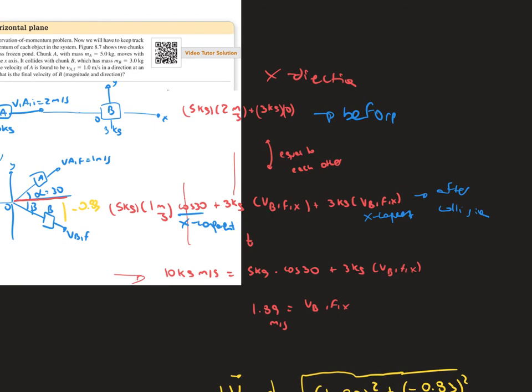So first, we get the x-components in the x-direction. We add them up and say that the mass of object A times the velocity plus the mass of object B times the velocity is one component, and that's going to be before the collision. After the collision, we have the mass of object A times the velocity times the x-component. In this case, it's going to be cosine of 30, which is the angle given. That's going to be added up to mass B times the velocity, the final velocity of B in the x-direction.